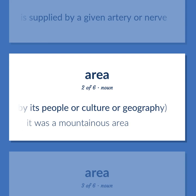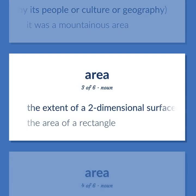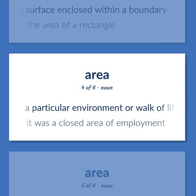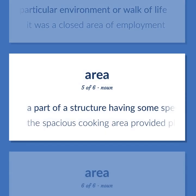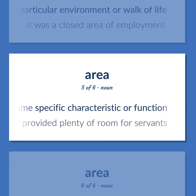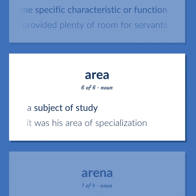Area: A mountainous area. The extent of a two-dimensional surface enclosed within a boundary — the area of a rectangle. A particular environment or walk of life — it was a closed area of employment. A part of a structure having some specific characteristic or function — the spacious cooking area provided plenty of room for servants. A subject of study — it was his area of specialization.